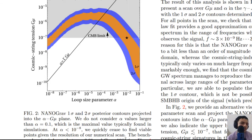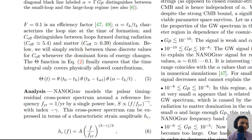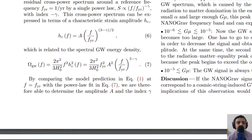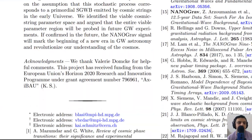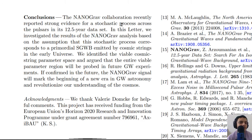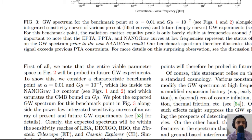There is another paper on pulsar timings. The conclusion is that this collaboration reports strong evidence for a stochastic process across pulsars in the 12.5-year data set. The stochastic process corresponds to a primordial stochastic gravitational wave background emitted by cosmic strings in the early universe. Viable cosmic string parameters have been identified, and it is argued that the entire viable parameter space can be probed in future experiments.